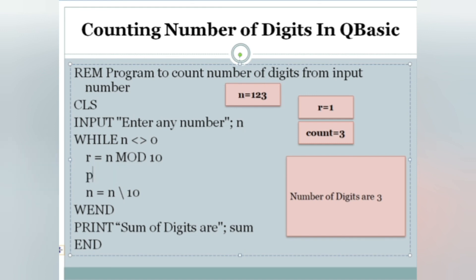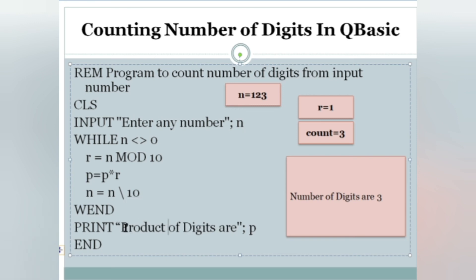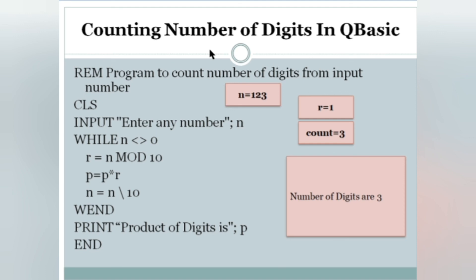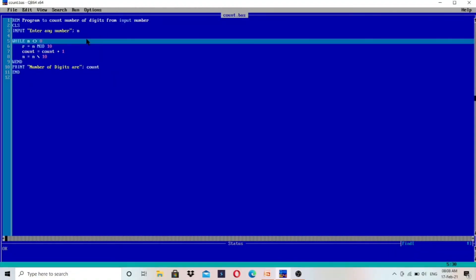For the product of digits, write P equals to P multiplied by R, and print 'Product of digits are P'. Just do the dry run and you will understand clearly. If you don't understand, comment below and I will make the next video on this. Let's go to the QBasic screen and run these programs.